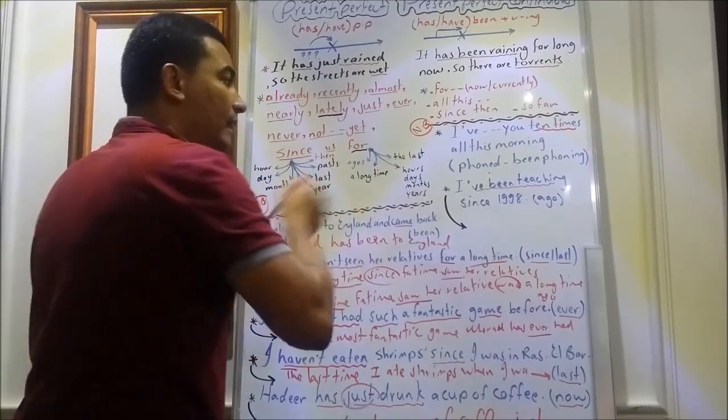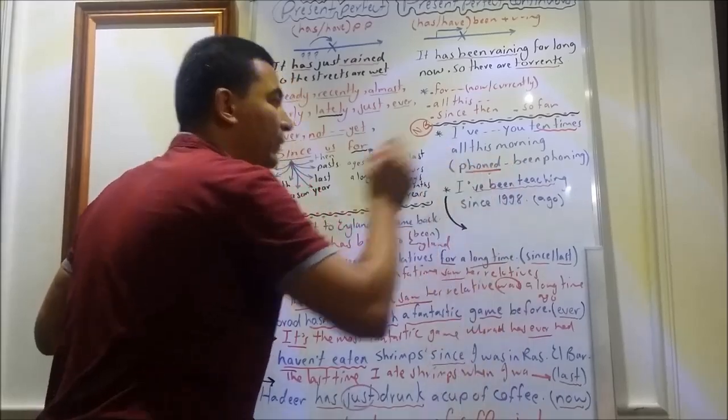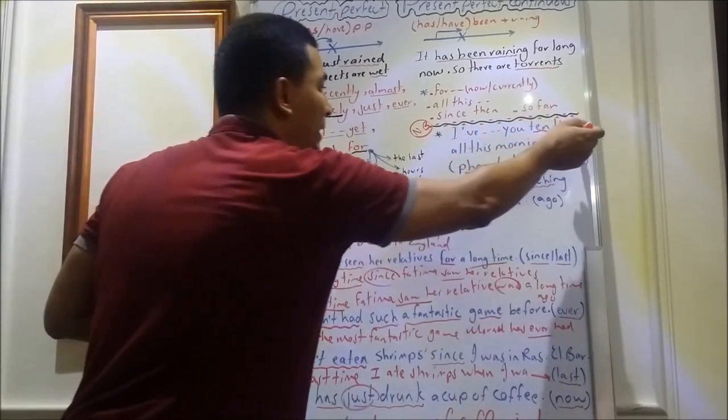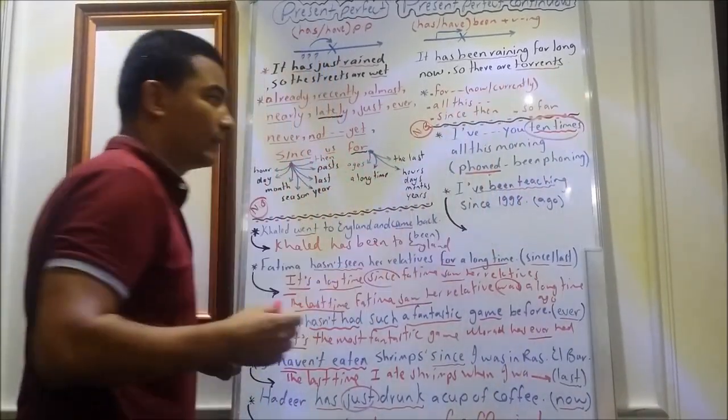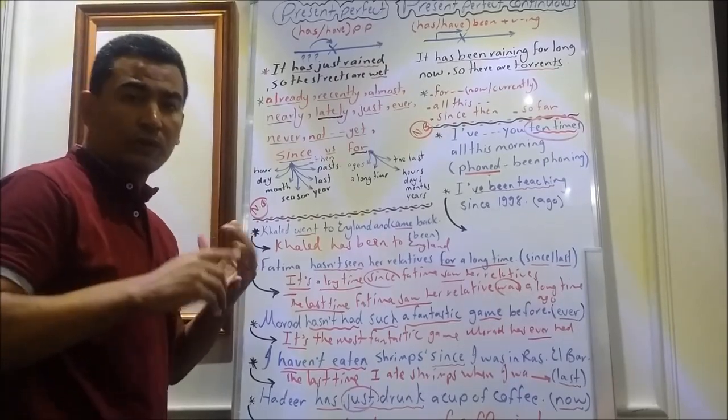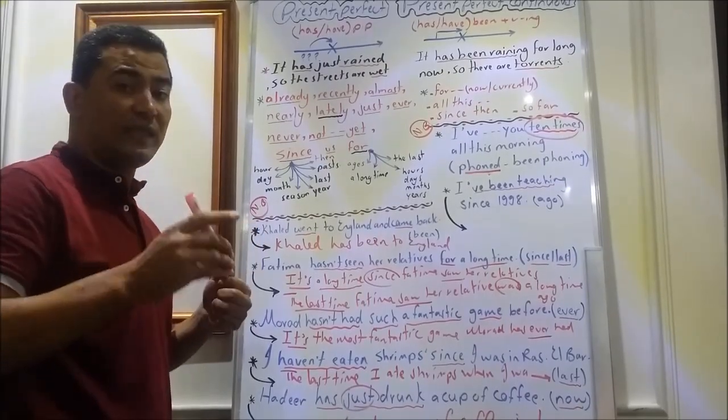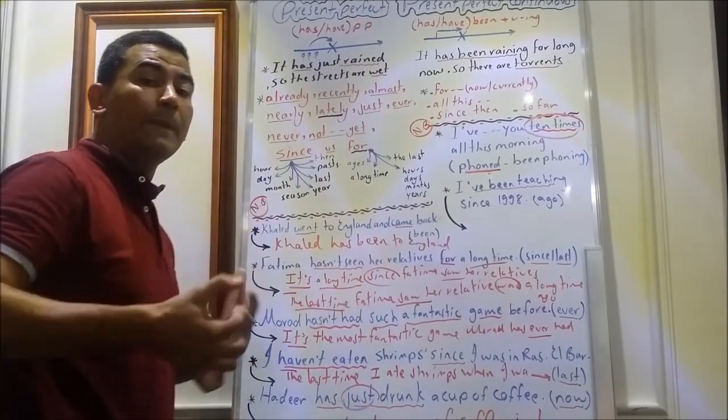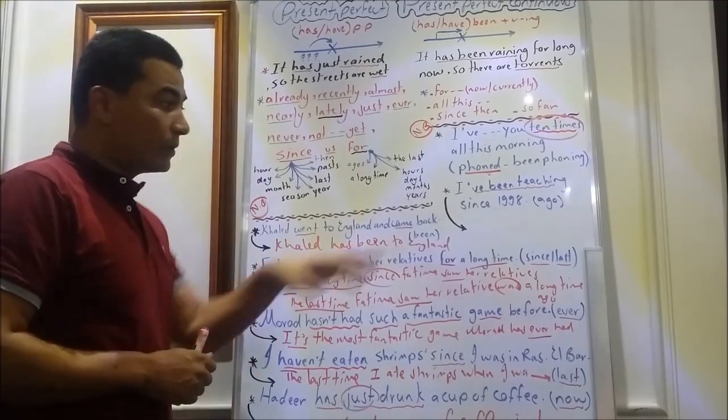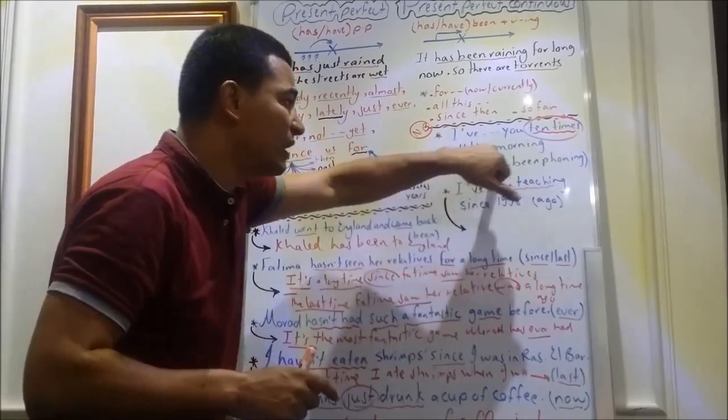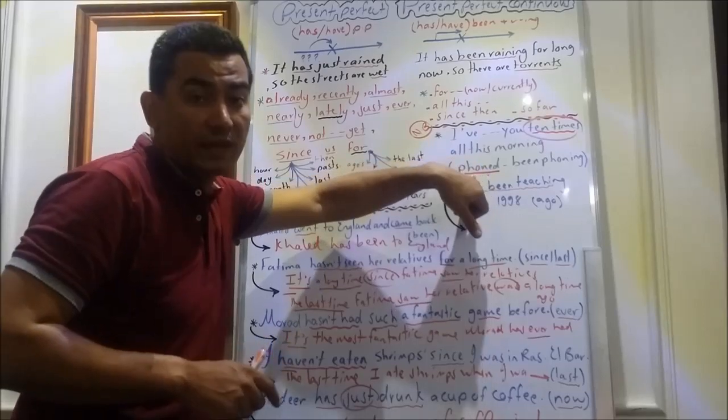But, in this sentence, I use present perfect. Why? I have mentioned the times of happening. It means that I don't use present perfect continuous if I have mentioned the times of happening of the verb. So, in this sentence, in spite of having all this morning, I have used present perfect.